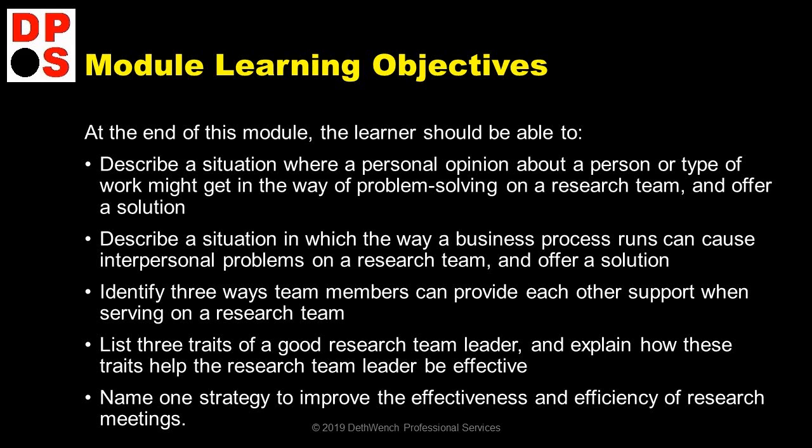Describe a situation in which the way a business process runs can cause interpersonal problems on a research team and offer a solution? Identify three ways team members can provide each other's support when serving on a research team. List three traits of a good research team leader and explain how these traits help the research team leader be effective.